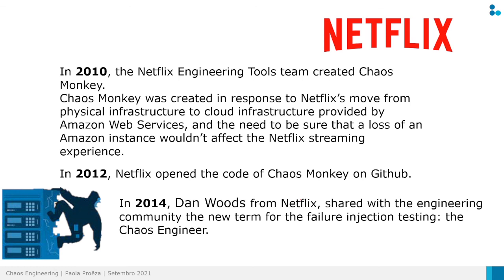In 2012, Netflix opened the code of ChaosMonkey on GitHub. Then in 2014, Dan Woods from Netflix shared with the engineering community the new term for failure injection testing: Chaos Engineering. He shared it on Twitter and with colleagues at other companies, and they created this name — Chaos Engineering — the same name we use today, which all companies have adopted since then.